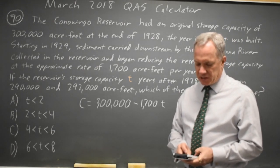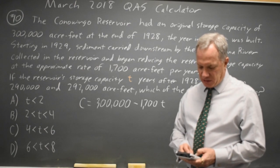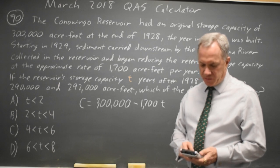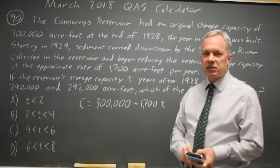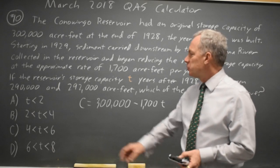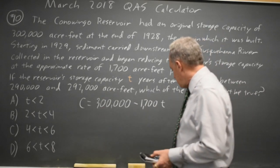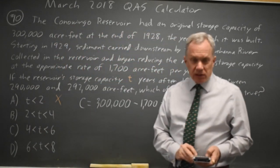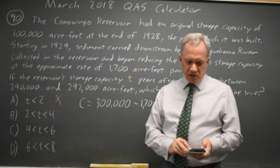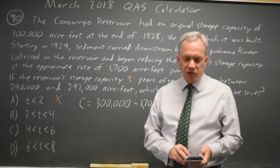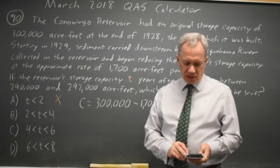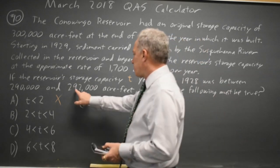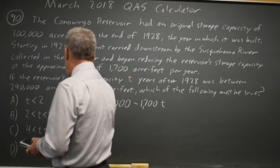So I'm going to type 300,000 minus 1,700 times 1, and I get 298,000, well 298,300, but that's too big. So T equals 1 does not work. On my graphing calculator, it's easier to recall the entry, and then I'll type over, instead of times 1, times 3, and I get 294,900, which is also bigger than 292, so choice B is wrong.